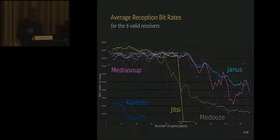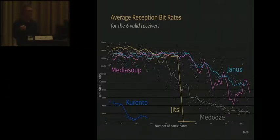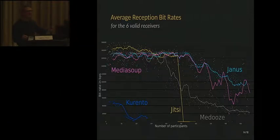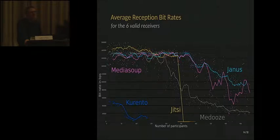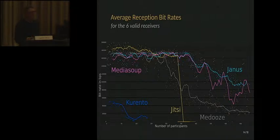For Jitsi, while it handles the load pretty well up to 245 participants, at that point when you add one more participant the video flow just stops. It doesn't crash — it's still alive — but there is no more transmission between participants. We have no explanation for that and have forwarded the problem to the Jitsi team. For the three others — Medooze, Mediasoup, and Janus — they were all able to reach the final load of 70 rooms and 490 participants. Medooze loses bitrate more quickly than Janus and Mediasoup, but all three are able to handle the load.